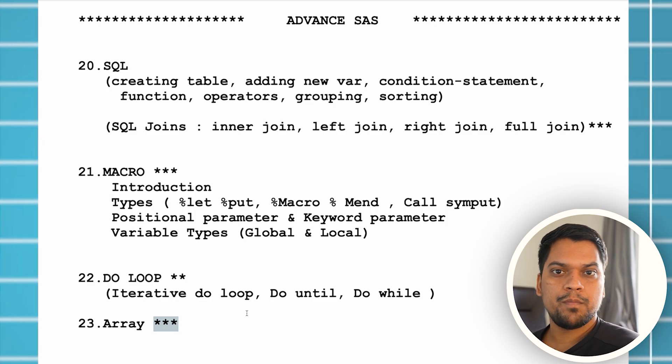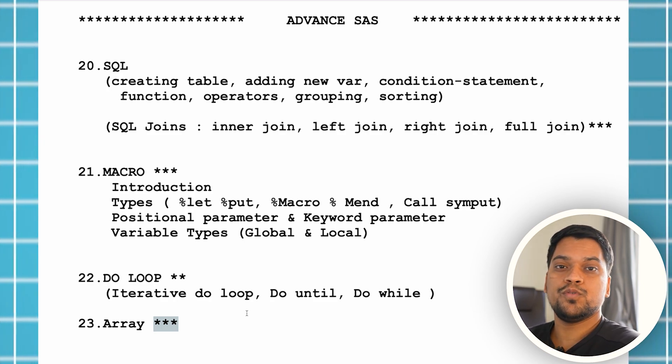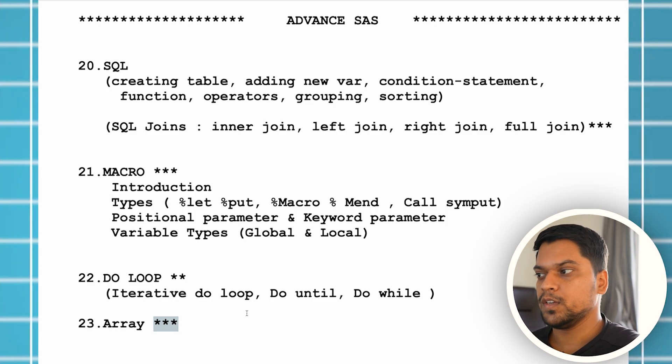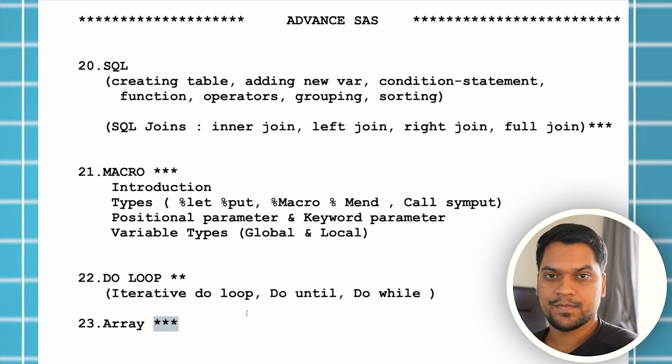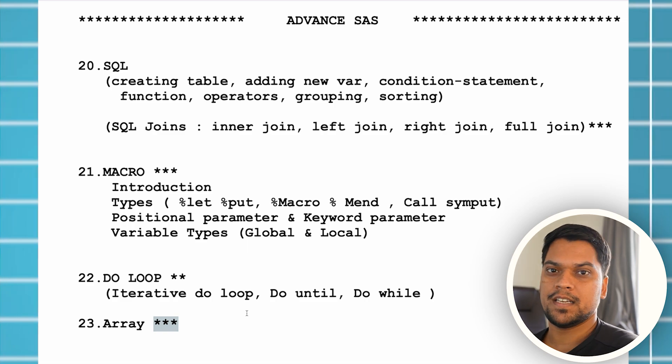Those who don't know the SaaS software won't understand anything from the syllabus — only those who've already learned can understand. In simple terms: base SaaS is basic-level programming, advanced SaaS is advanced-level programming. Everything is connected — if you've completed base SaaS, then only can you learn advanced SaaS, and if you've done advanced SaaS, you can move to clinical SaaS.